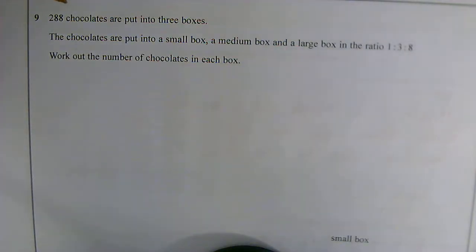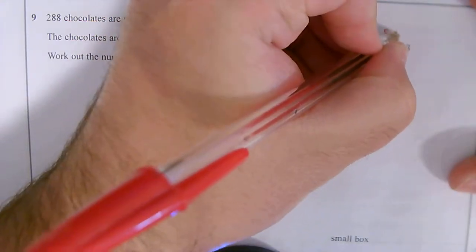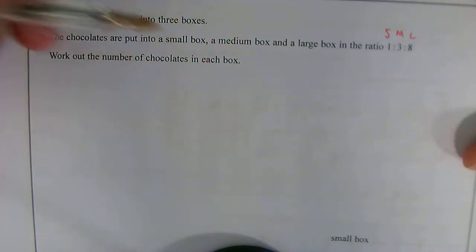Question 9. 288 chocolates are put into three boxes. The chocolates are put into small, medium, and large boxes in the ratio 1 to 3 to 8. So small, medium, large. Work out the number of chocolates in each box.